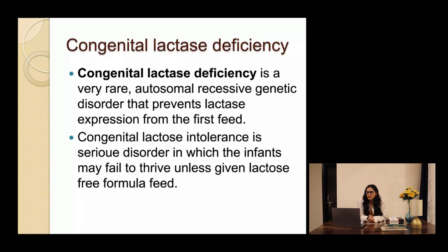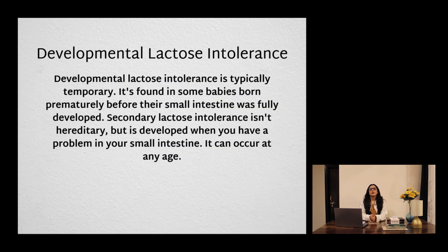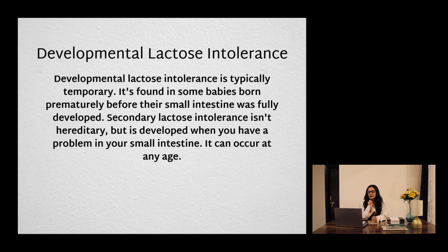The third type is congenital lactose intolerance, a rare genetic disorder present from birth where the body cannot produce lactase at all. The fourth is developmental lactose intolerance, seen in premature infants whose small intestine is underdeveloped, resulting in inability to hydrolyze lactose. However, this condition can improve with age as the small intestine matures and adequate lactase activity is restored.